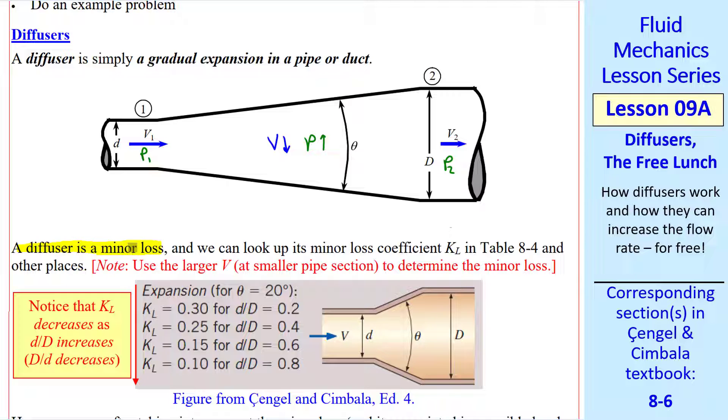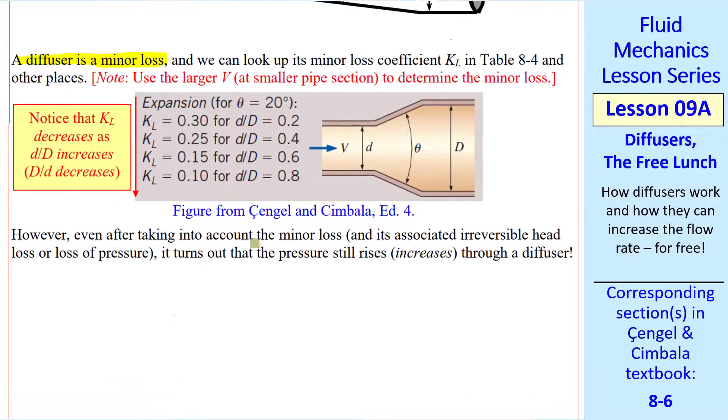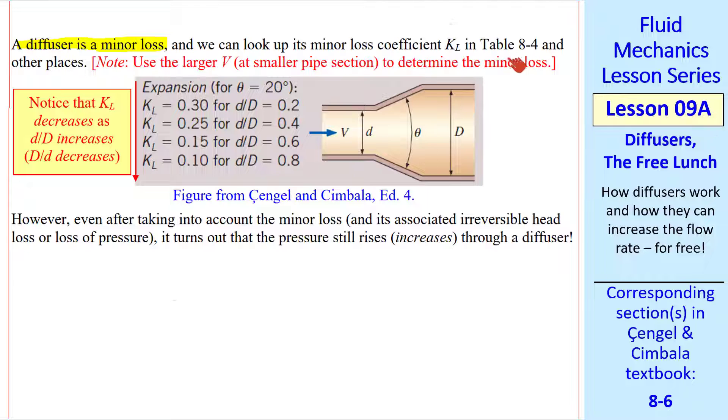A diffuser is a minor loss, so it has a minor loss coefficient. We can look up KL in tables, such as this one in our textbook, or other books, or online.